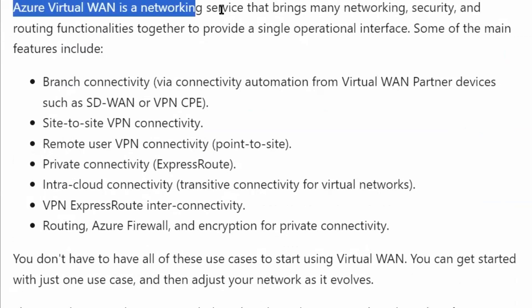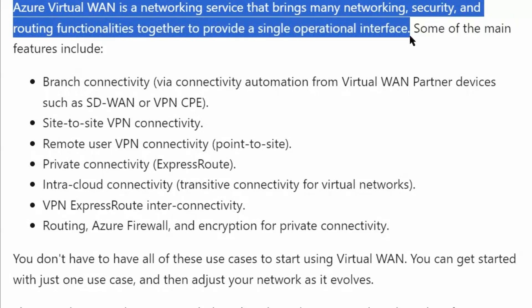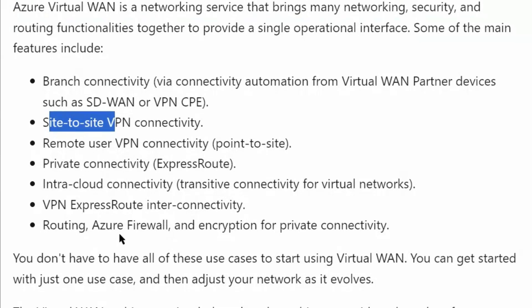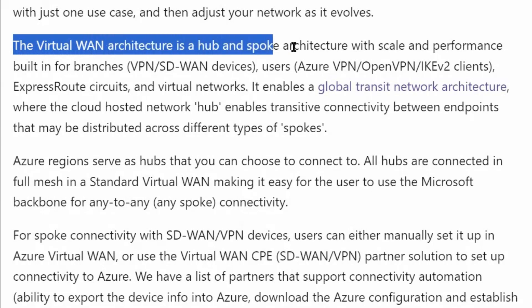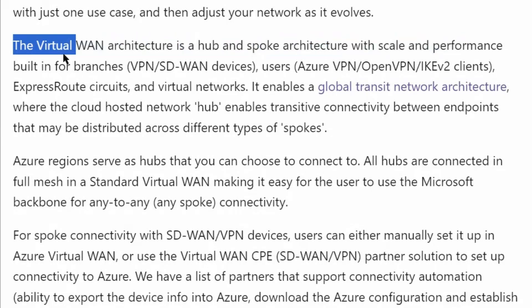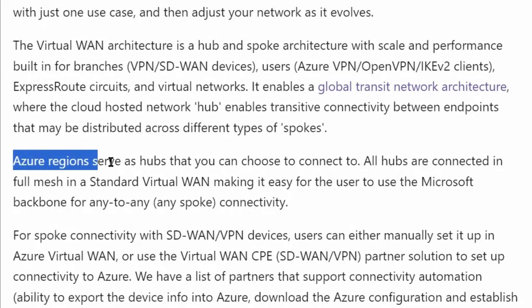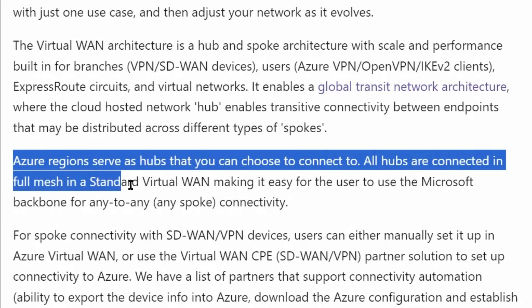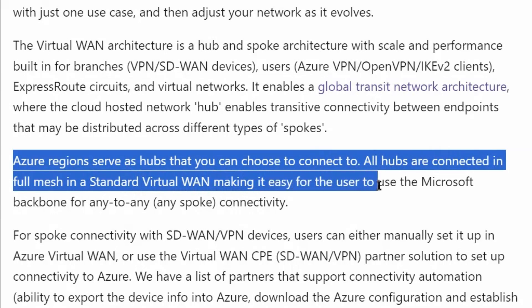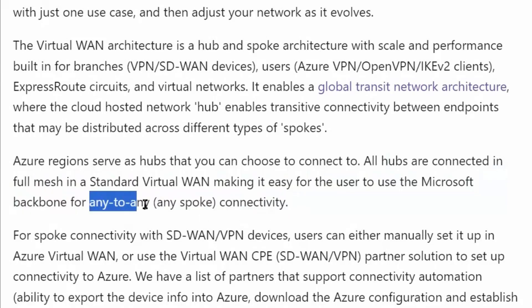Azure Virtual WAN is a networking service that brings many networking, security, and routing functionalities together to provide a single operational interface. It is used for branch connectivity, site-to-site connectivity, etc. The virtual WAN architecture is a hub-and-spoke architecture with scale and performance built in for branches. Azure regions serve as hubs that you can choose to connect to, and all hubs are connected in full mesh in a standard virtual WAN, making it easy for the user to use the Microsoft backbone for any-to-any connectivity — meaning branch-to-branch connectivity.